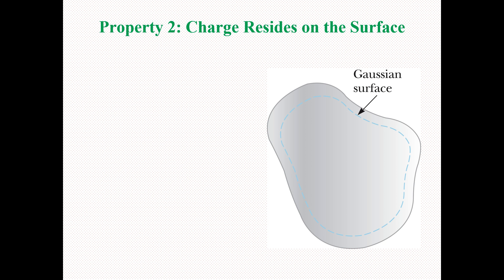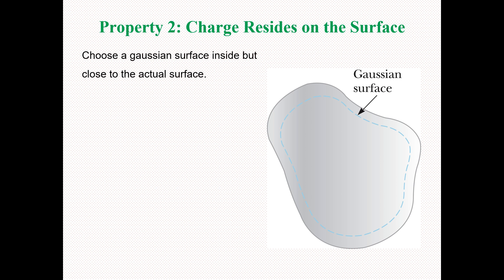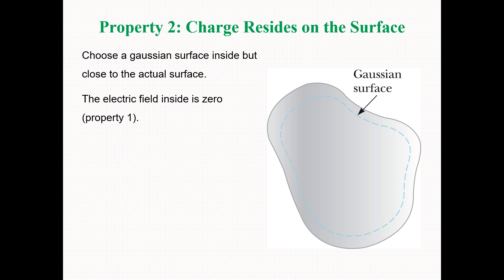Property number two: charge resides on the surface. To show this, we choose a Gaussian surface inside but close to the actual surface. The dotted line represents the Gaussian surface drawn close to the actual surface. The electric field inside is zero according to property number one, so there is no net flux through the Gaussian surface.